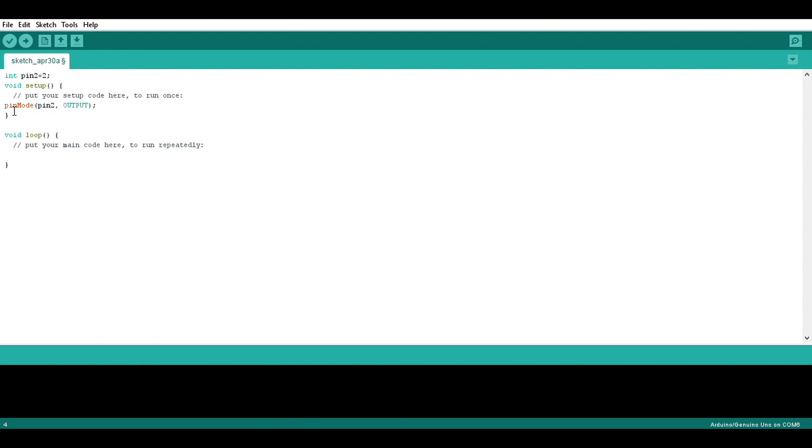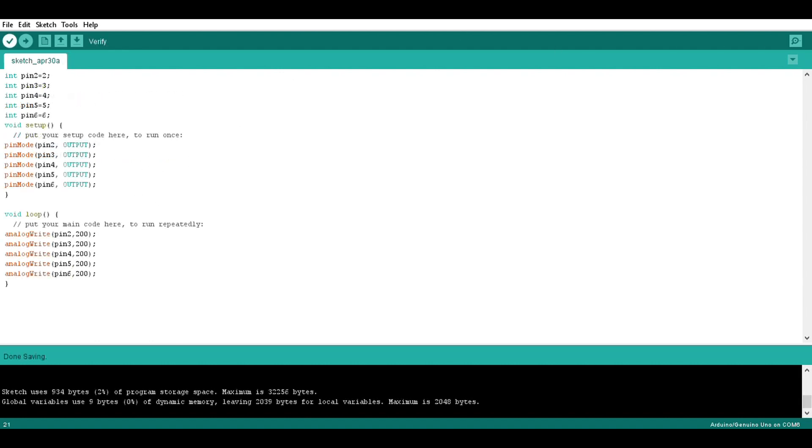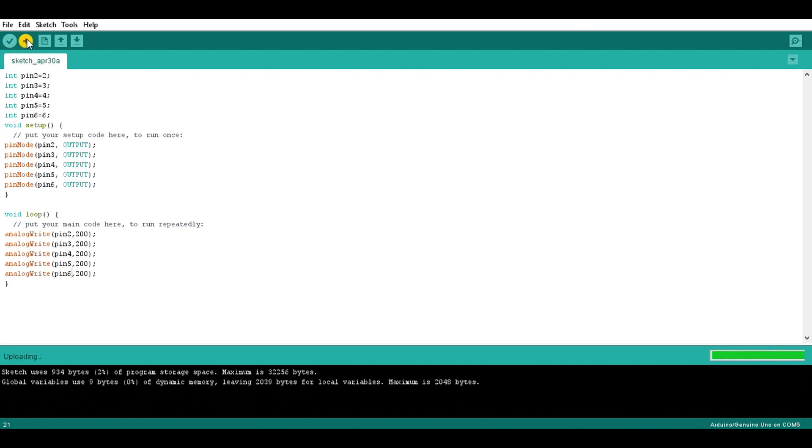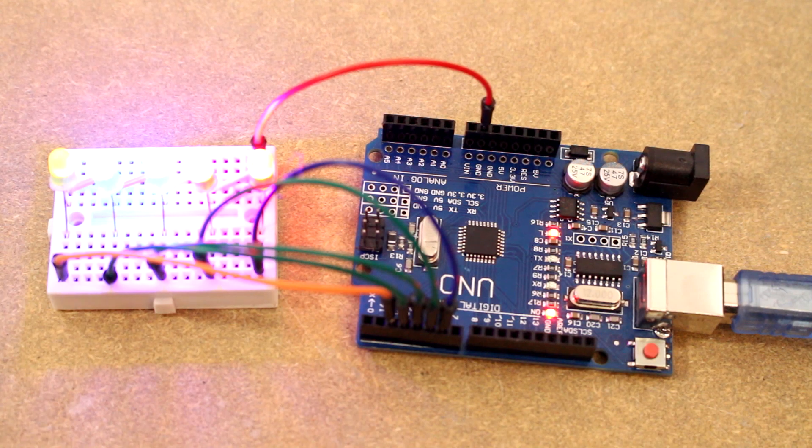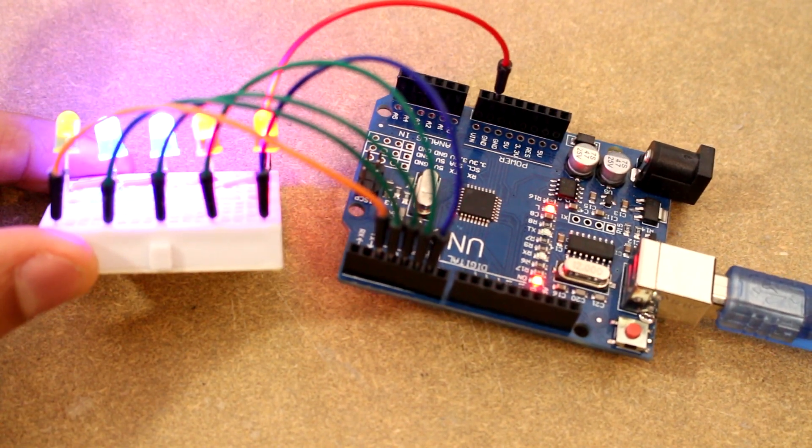After that I just want to write the value of 200 to it and 200 represents around one volt. With the maximum voltage you can send it being five volts and that's the value around a thousand. So now I do this for all the pins from two to six and now as you can see I upload it onto the board and all the lights go on.